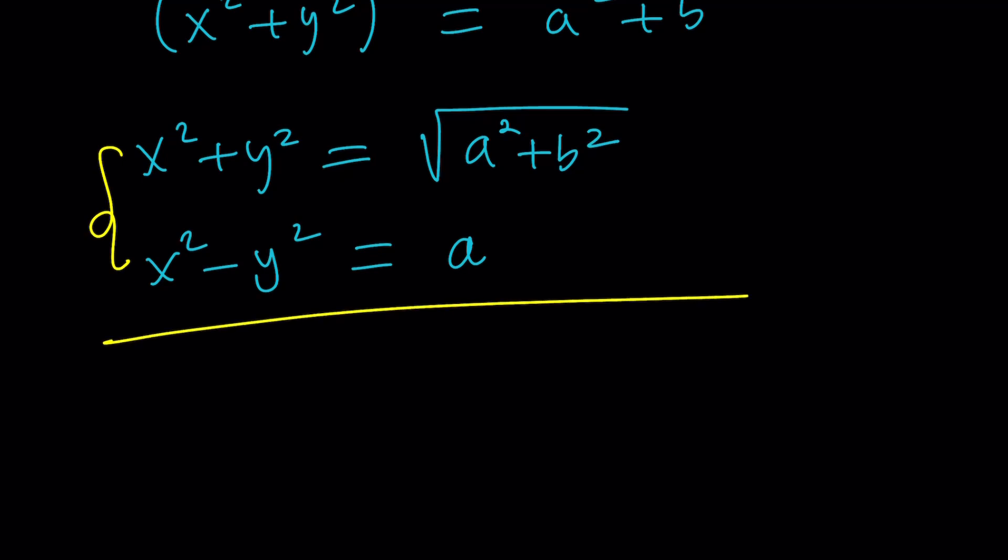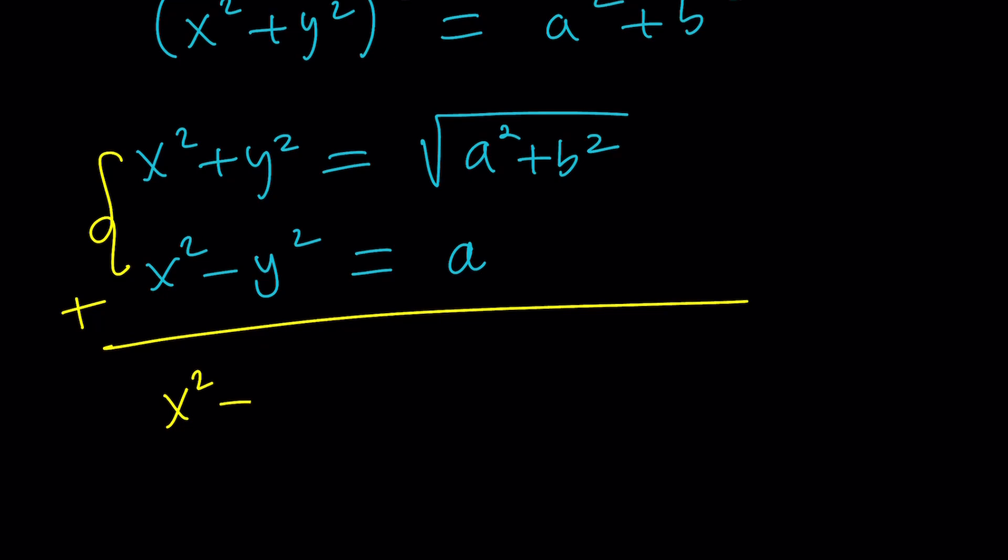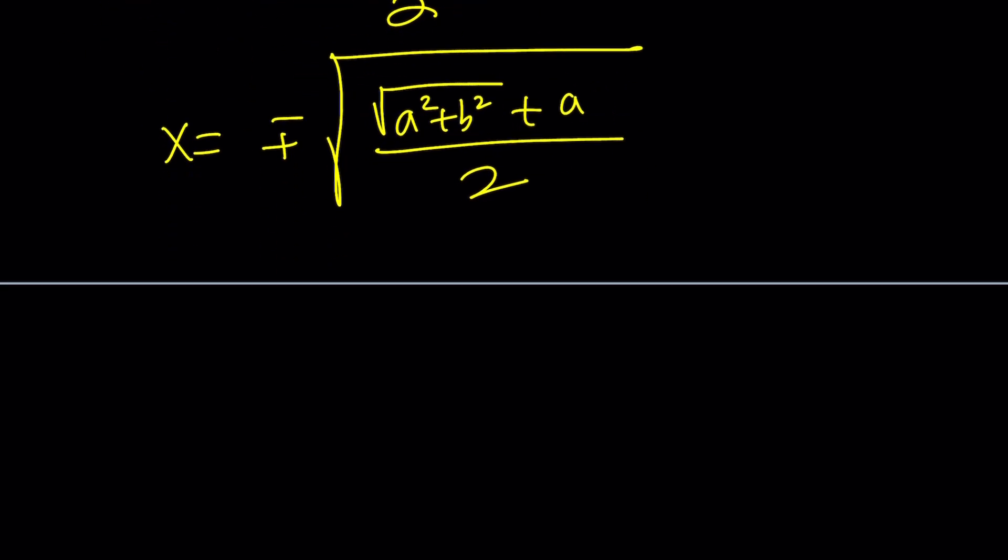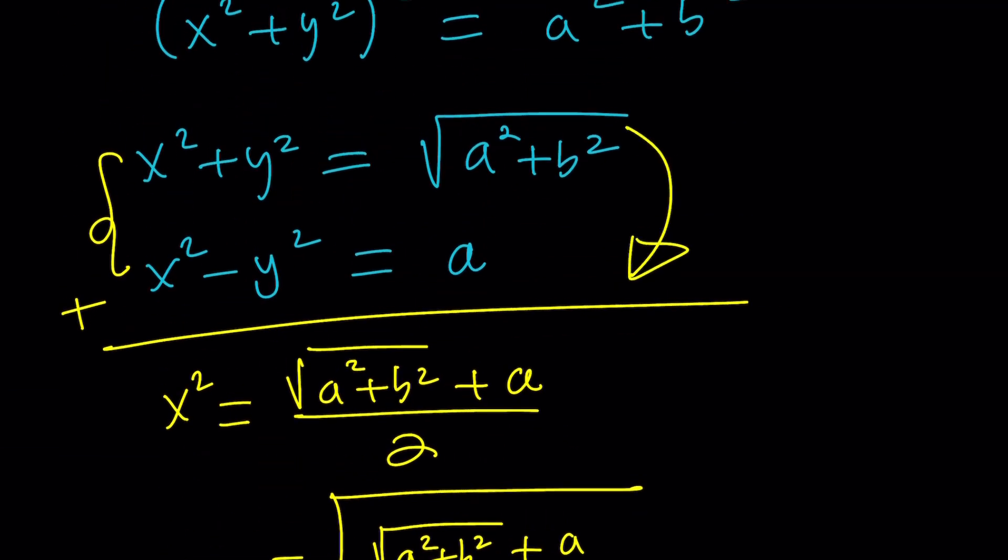So let's make a system. We already knew that x squared minus y squared was equal to a. That's how we found x squared plus y squared. And now we can solve for x squared and y squared. Add these two equations, you're going to get 2x squared, and then divide by 2. You're going to get x squared equals square root of a squared plus b squared plus a divided by 2. Make sense? Think about it.